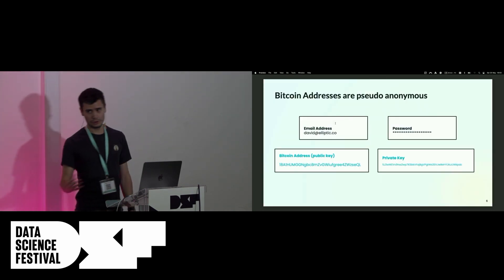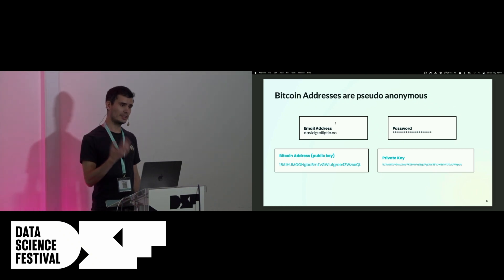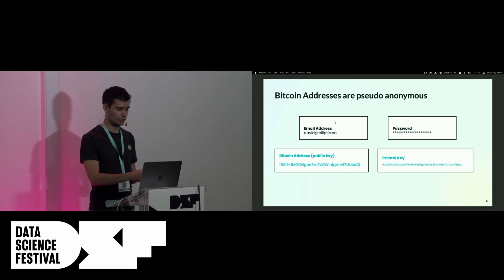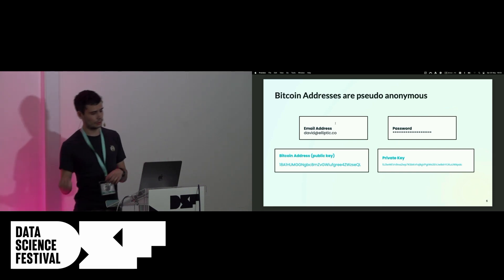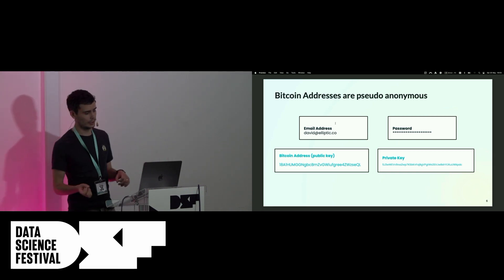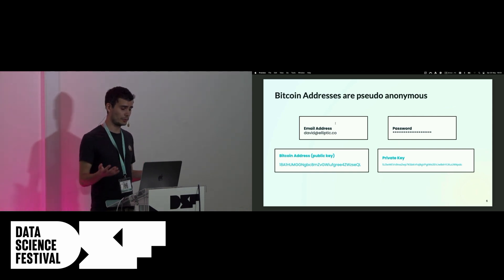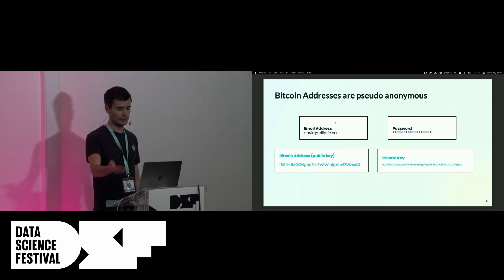The other thing you should know about crypto is that the addresses are anonymous — we call it pseudo-anonymous — so it's similar to an email address. An email address doesn't have to have your name in it, it's just a string, and you have a secret password. In crypto, you have a Bitcoin address or a crypto address, so it doesn't mean anything. It doesn't have your name in it, and you also have the private key.